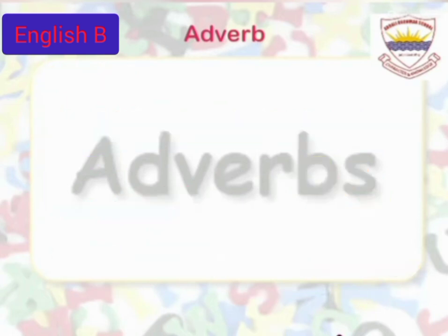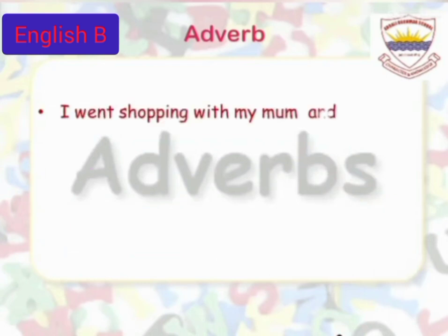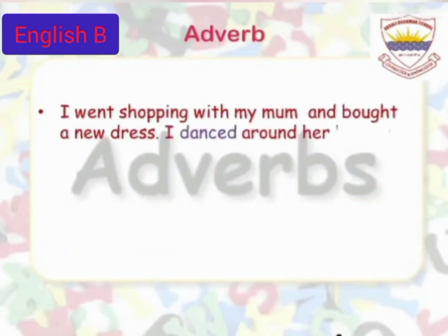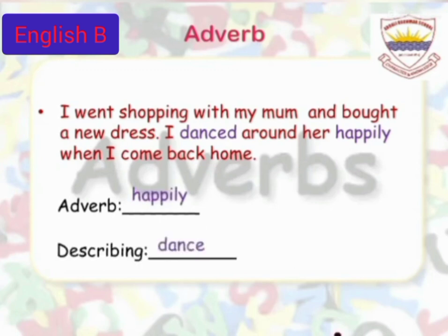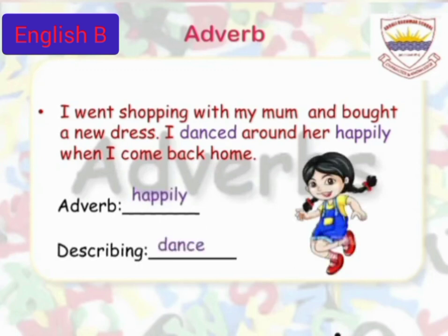I went shopping with my mom and bought a new dress. I danced around happily when I came back home. In these sentences, the adverb is happily, which describes the verb dance. Look at the picture — the girl is dancing happily.